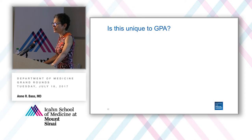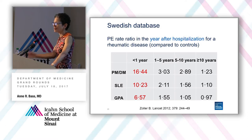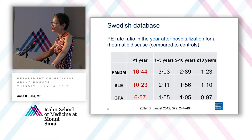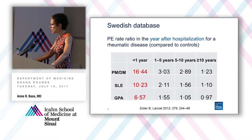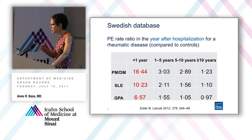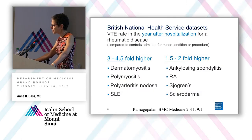Is this unique to GPA, or is it a feature of all autoimmune diseases? A large Swedish database study asked what is the rate of VTE in the first year after hospitalization for an autoimmune disease, looking at about 30 conditions. Essentially every autoimmune disease — polymyositis, dermatomyositis, lupus, GPA — showed increased VTE rates in that first year, then rates decline over time. British National Health Service data confirmed the same: dermato- and polymyositis, PAN, lupus had three- to five-fold higher rates, with increased rates even in inflammatory arthritis, Sjögren's, and scleroderma.